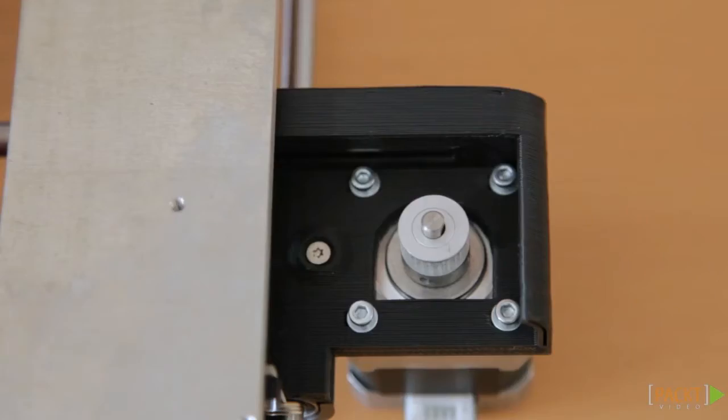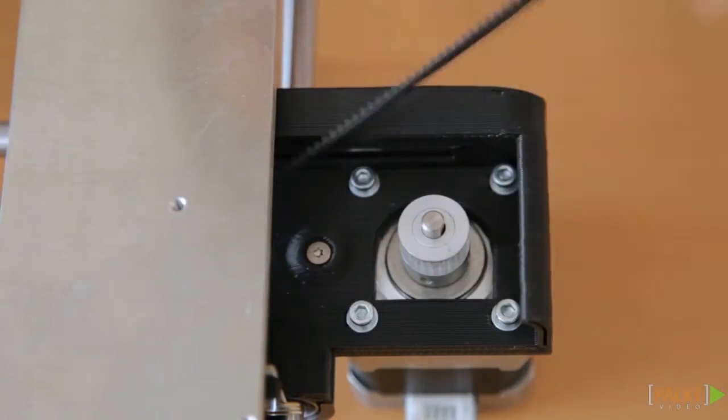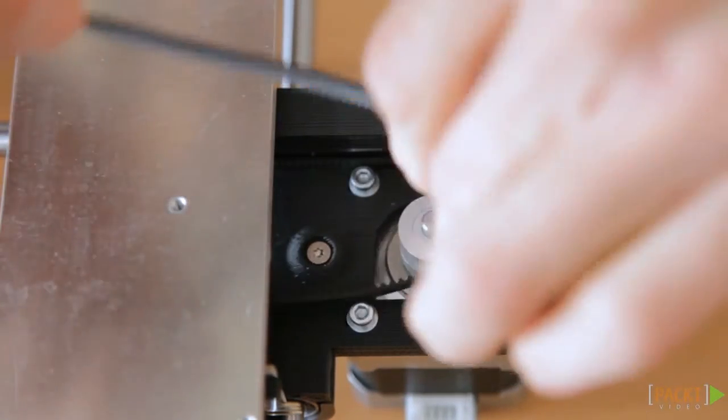Put the timing belt around the motor pulley to complete its path. Make sure the motor is positioned as far inside as possible.